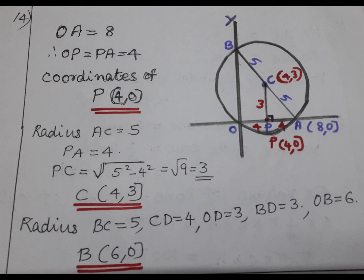Radius BC is 5. CD is 4, OD is 3, BD is 3. OB is 6. B coordinates (6,0).